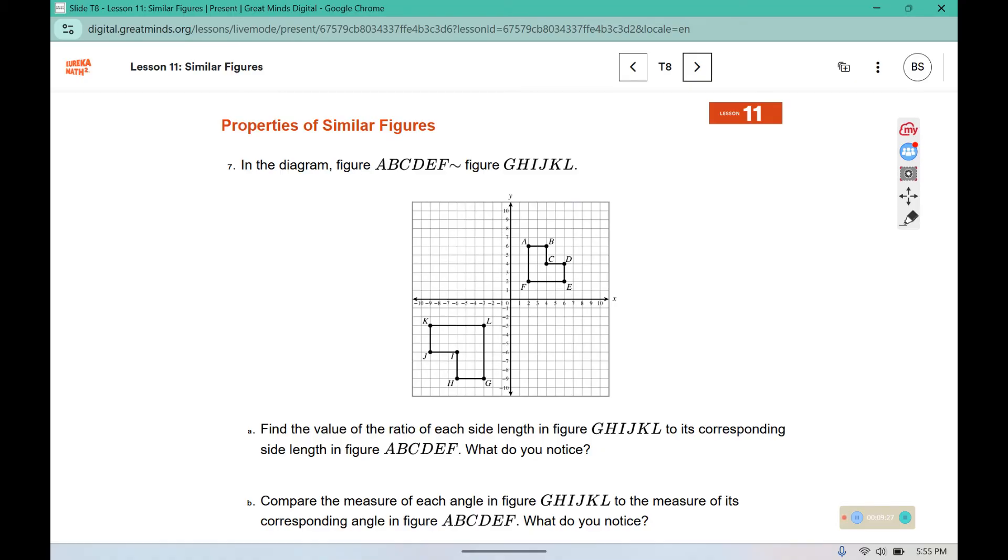Number 7, in the diagram ABCDEF is similar to figure GHIJKL. Find the value of the ratio of each side length in figure GHIJKL to its corresponding side length in figure ABCDEF. What do you notice?